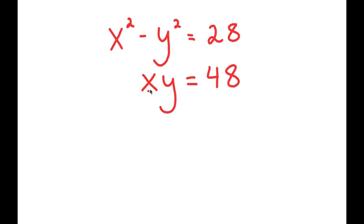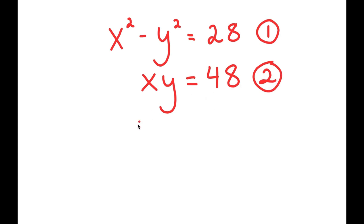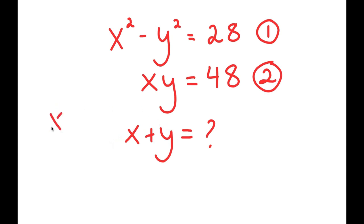In this system of equations, I have x squared minus y squared is equal to 28, and x times y equals 48. Let's call this equation 1 and equation 2. I want to find the value of x plus y, and finding this is straightforward once we find the values of x and y.